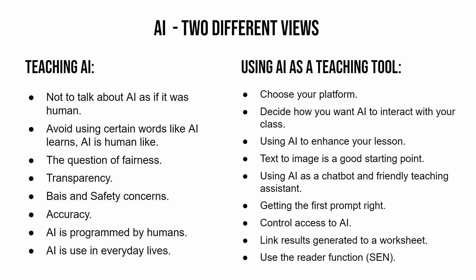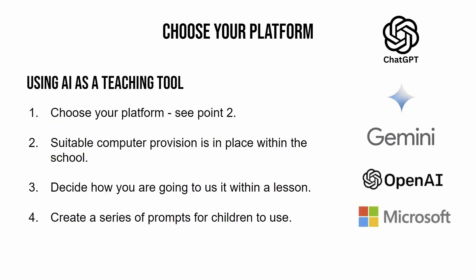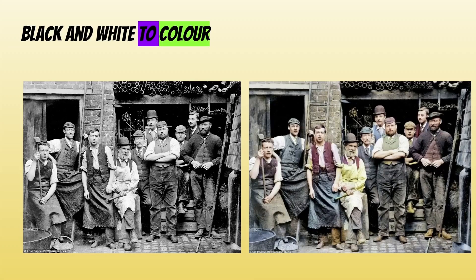If you're going to use AI to create a resource, you need to link the generated result to a worksheet and make sure children are doing some work from that resource. Choose your platform based on what provision your school has, decide how you're going to use it in your lesson, and then create a series of prompts for children to use. Creating the prompts is really important because it will set the chatbot up in exactly the way you want.